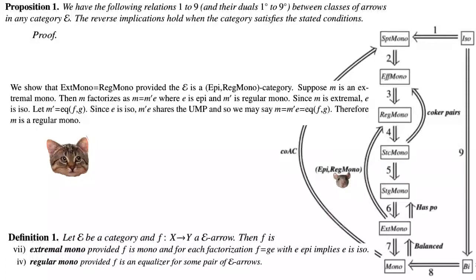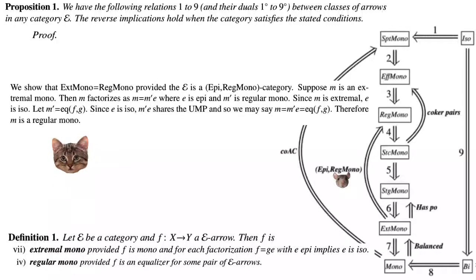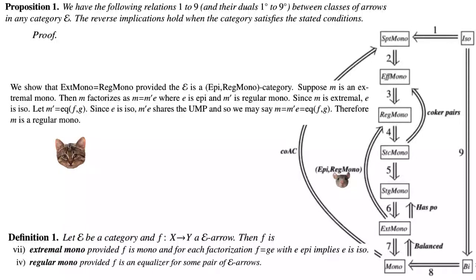If E is an epi–regular-mono category — meaning every arrow factorizes as an epi followed by a regular mono — we show extremal monos equal regular monos. Let M be an extremal mono. Then M factorizes as M = M'E where E is epi and M' is a regular mono. Since M is extremal, E is iso. If M' is the equalizer of F and G, then M = M'E shares the same universal mapping property, so M is the equalizer of F and G — hence M is a regular mono.